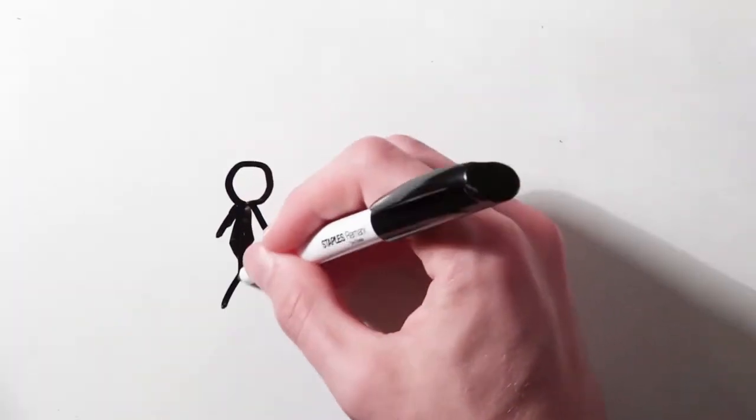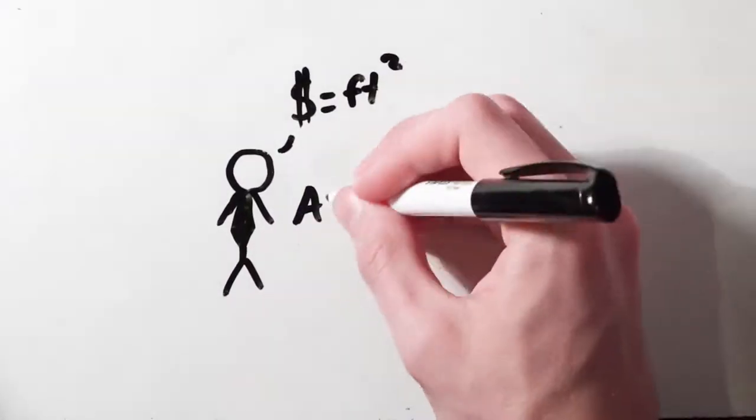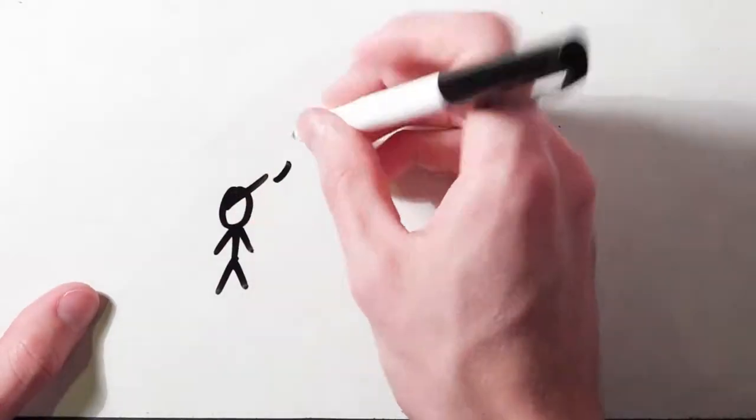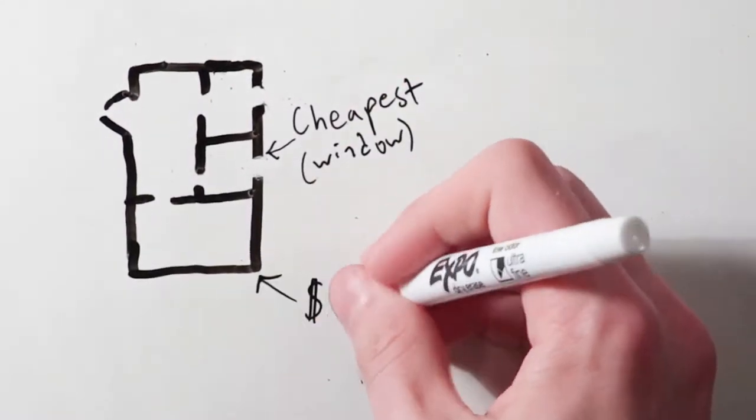Alex thinks the person with the largest room should pay the most money. But Bill notices a problem. With that system, the person paying the least has a window, while the person paying the most does not.